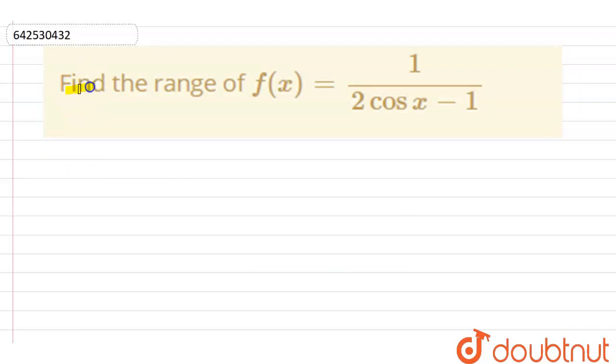Hello everyone, in this question we need to find the range of function. The function is 1 by 2 cos x minus 1. We need to find the range.